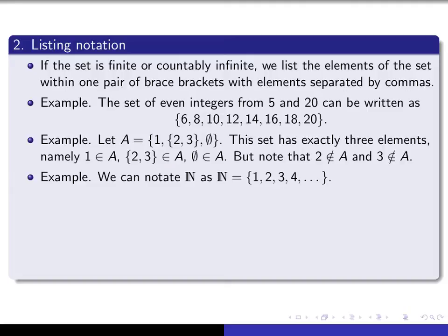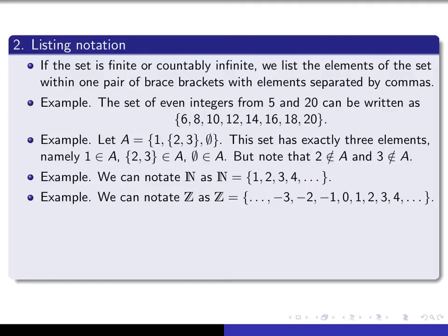We can also use listing notation to notate certain countably infinite sets. For example, we can notate the set of natural numbers using listing notation. By putting three dots at the end, it indicates that it's an infinite set and the pattern continues. We can do a similar thing for the set of integers by having dots go on either end, indicating that the pattern continues forever.